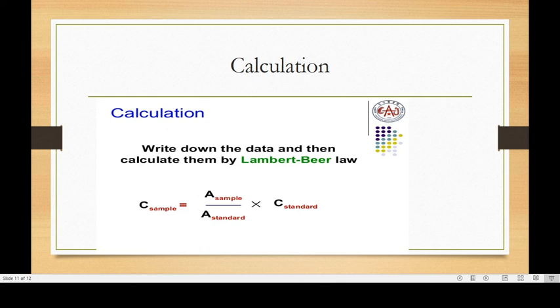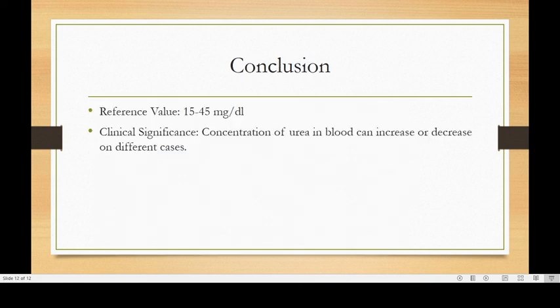In conclusion, the reference value, the normal value of urea in blood, is 15 to 45 mg per dL. The clinical significance is that concentration of urea increases in blood in cases of heart failure, shock, hemorrhage, dehydration, high protein diet, renal diseases like acute and chronic renal failure, glomerulonephritis and tubular necrosis, and post-renal diseases like urinary tract obstruction.